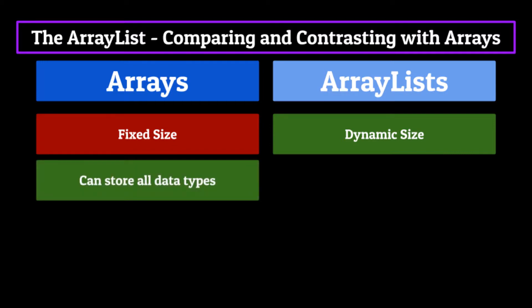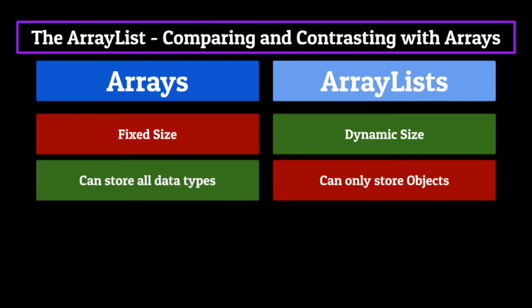Arrays can store all types of data, whereas ArrayList can only store objects, meaning it cannot store primitives such as integers, strings, etc. Now, this problem is mostly solved through the auto boxing situation I talked about previously, but the fact still stands.